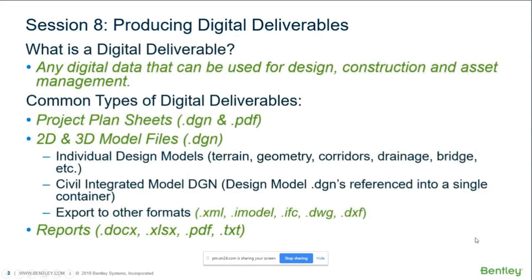So what exactly is a digital deliverable? It can be many things and many types of electronic formats, but in our world of transportation and civil engineering, it's basically any digital data that can be used for design, construction, and asset management. Some of the common types of digital deliverables we use are project plan sheets, which are generally DGN files if you're using Bentley products.